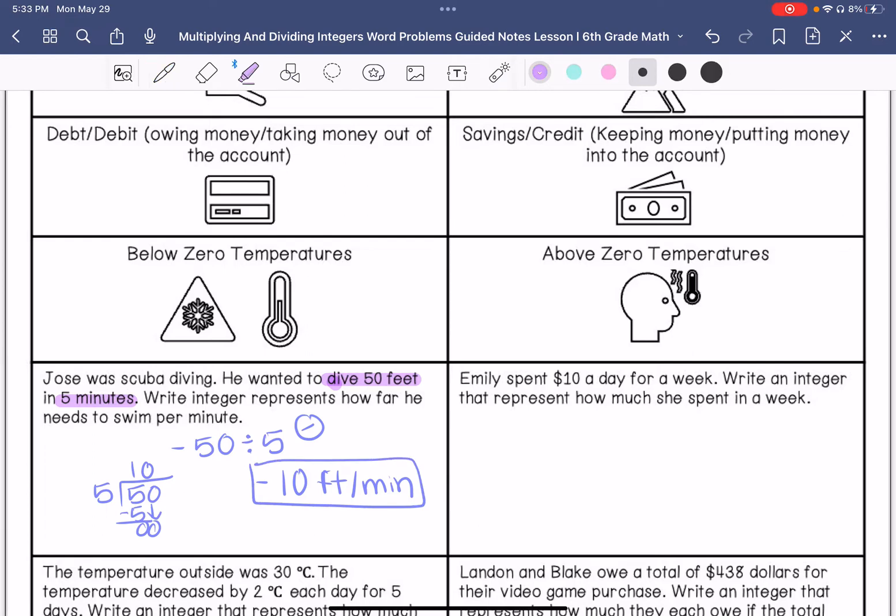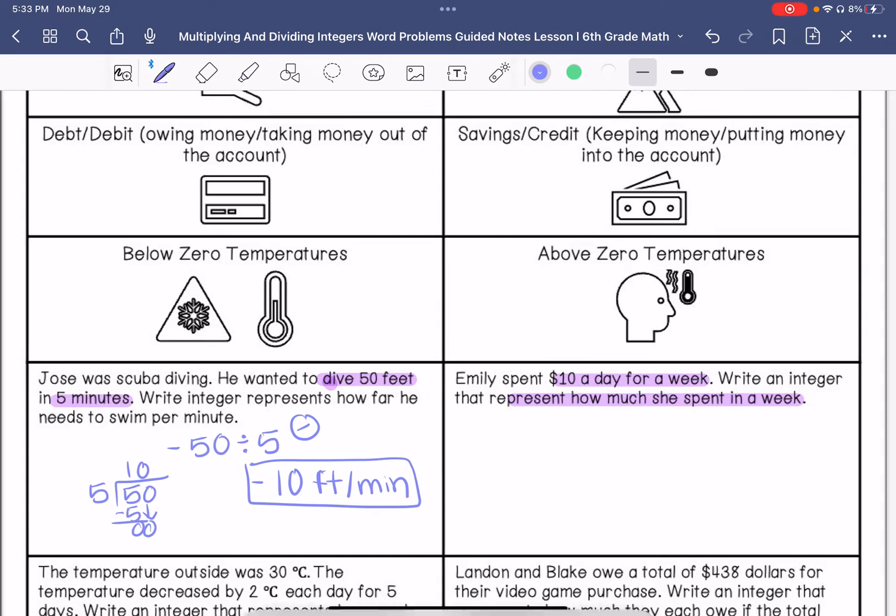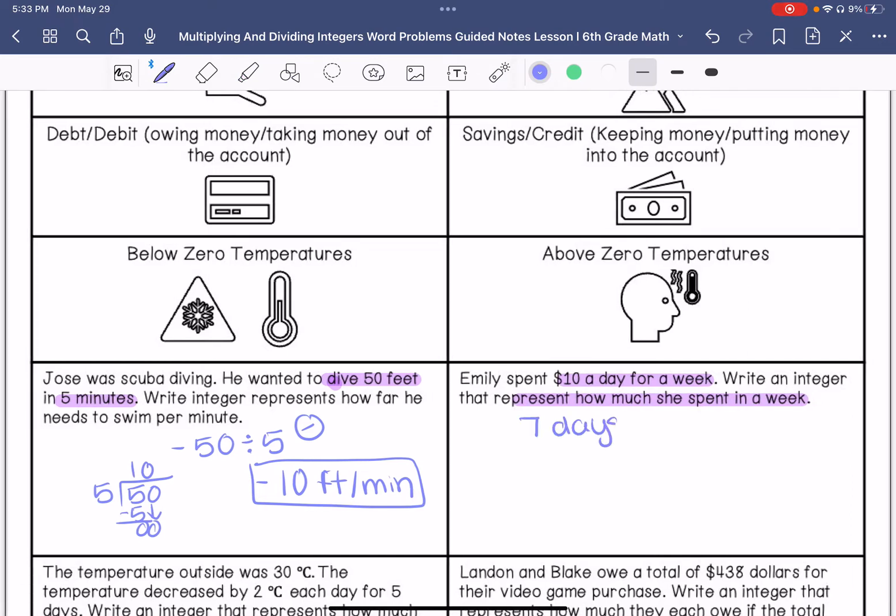Emily spent $10 a day for a week. Write an integer that represents how much money she spent in a week. There are 7 days in a week, we're spending money. So negative 10 times 7. So our answer is going to be negative. 10 times 7 is 70. So she is going to spend $70.